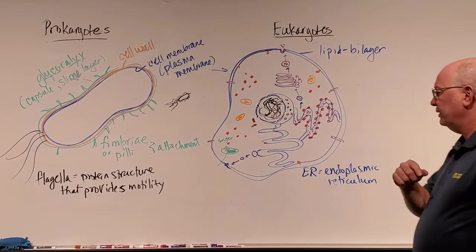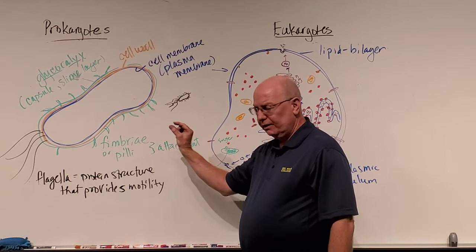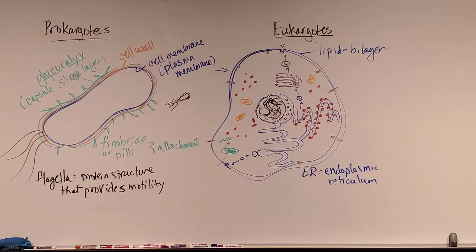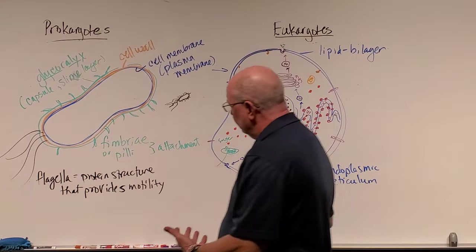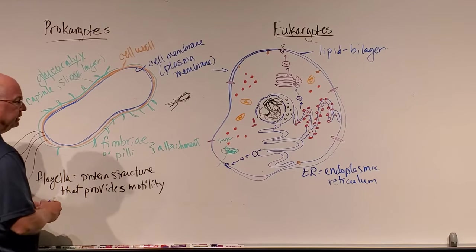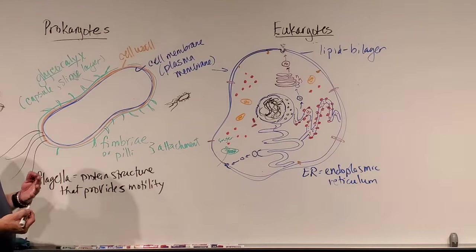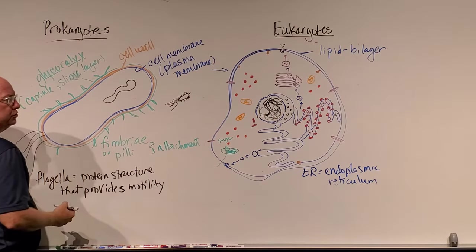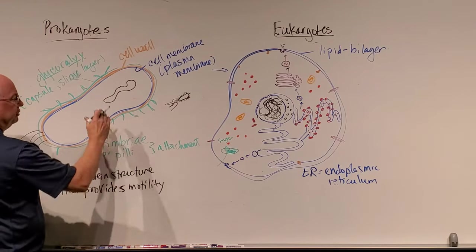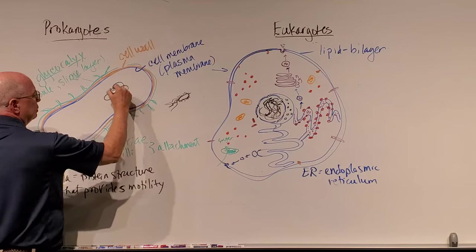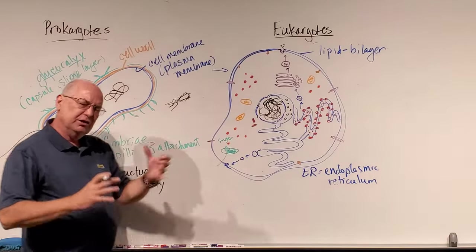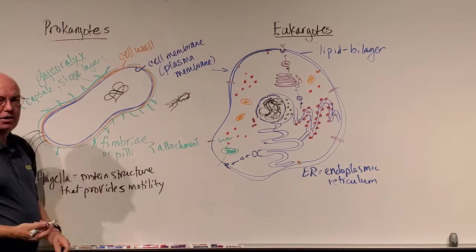Inside the bacterium, the DNA is usually a single circular chromosome, though it doesn't always appear as a single ring because it gets all folded up. The region where the chromosome is located is called the nucleoid — it's not a true nucleus, but it's somewhat nucleoid in nature. There's no membrane around it. Also in the cytoplasm there are ribosomes for protein synthesis. There can also be a plasmid — some extra-chromosomal DNA. Prokaryotes are much simpler — what's lacking inside the cytoplasm is all of the membranous organelles.